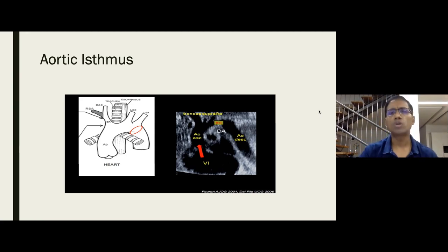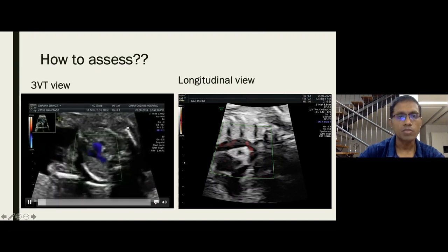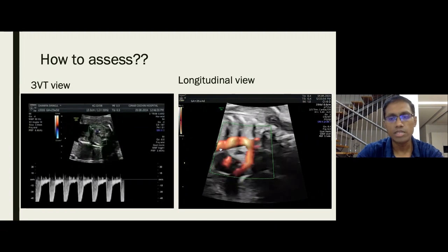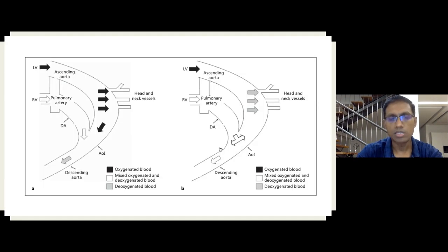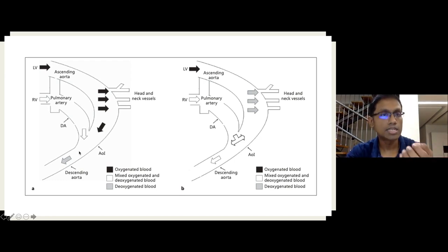The aortic isthmus is a junction between the aorta and ductus arteriosus, located distal to the left subclavian artery. It can be measured on the 3VT or sagittal view. At this junction, during systole the left ventricle pushes blood forward through the aortic isthmus while the right ventricle pushes blood in the opposite direction via the descending aorta. During diastole, once semi-lunar valves close, forward flow depends on the resistance difference between the placenta and the head-and-neck vessels.